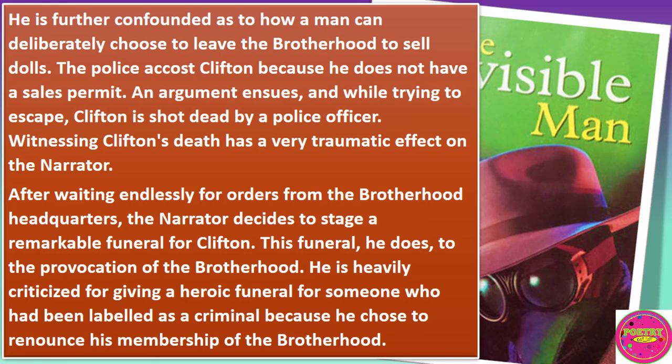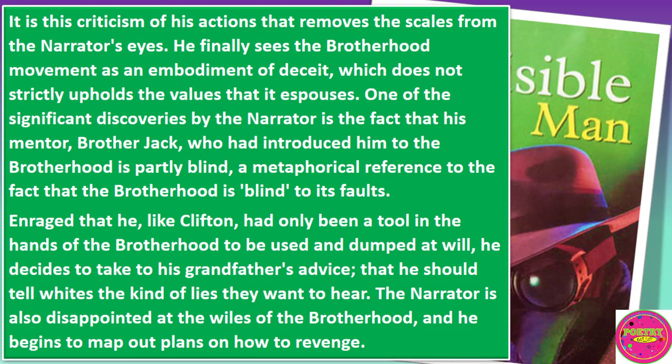The police accuse Clifton because he does not have a sales permit. An argument ensues, and while trying to escape, Clifton is shot dead by a police officer. Witnessing Clifton's death has a very traumatic effect on the narrator. After waiting endlessly for orders from the Brotherhood headquarters, the narrator decides to stage a remarkable funeral for Clifton. To the provocation of the Brotherhood, he is heavily criticized for giving a heroic funeral for someone who has been labeled a criminal because he chose to renounce his membership of the Brotherhood. It is this criticism of his action that removes the scales from the narrator's eyes. He finally sees the Brotherhood movement as an embodiment of deceit, which does not strictly uphold the values it espouses.